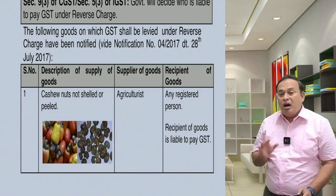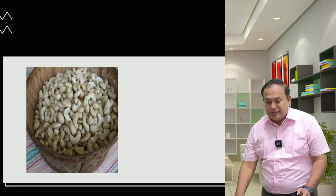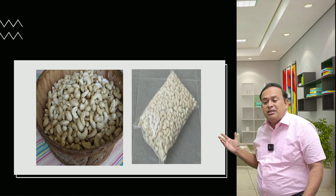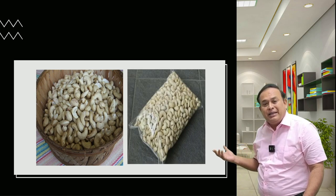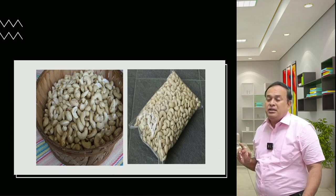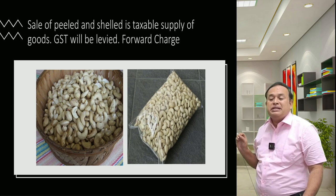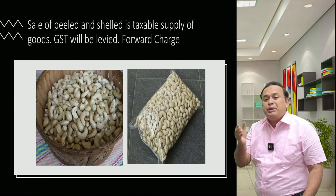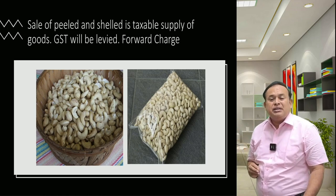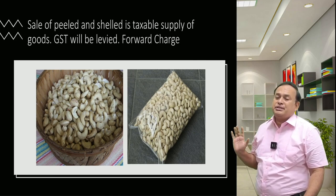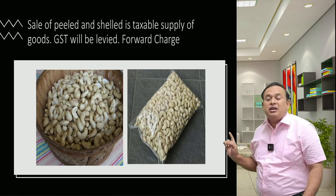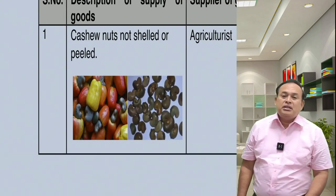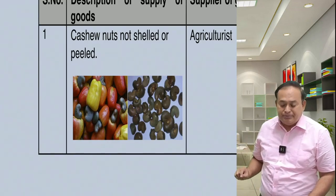However, if cashew nuts are ready to eat after shelling and packed — for example, pre-packaged in a pack not exceeding 25 kilos — then it is not under reverse charge. It is a forward charge, and 5% GST will attract. Reverse charge is applicable only for cashew nuts that are not shelled and not peeled. These are different from the ready-to-eat packaged cashew nuts.